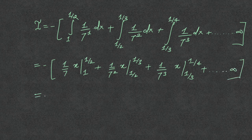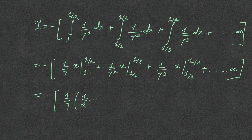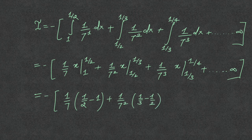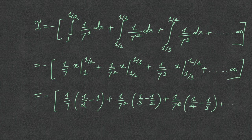This eventually becomes minus: 1 upon 7 times (1/2 minus 1), plus 1 upon 7 squared times (1/3 minus 1/2), plus so on up to infinity.